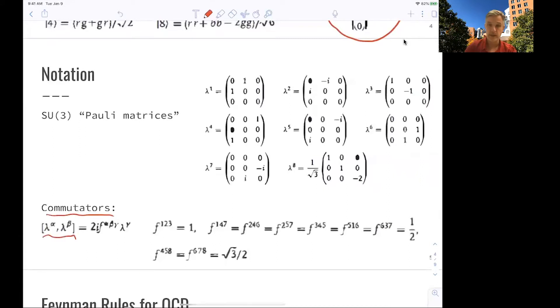There's commutator relations for this. So if you have two of those Gell-Mann matrices, and you try to write down the commutator, here, you find this is 2 times I times this structure functions, or structure constants, times the next Gell-Mann matrix.